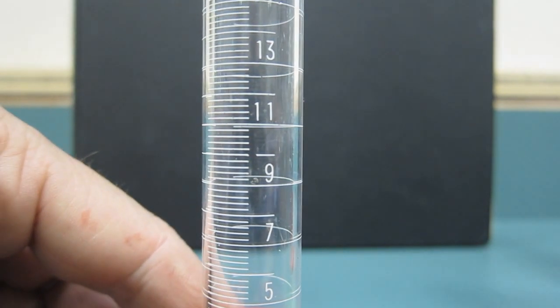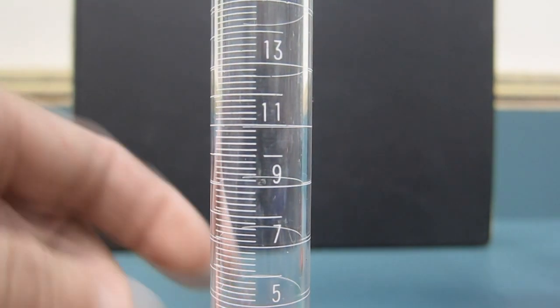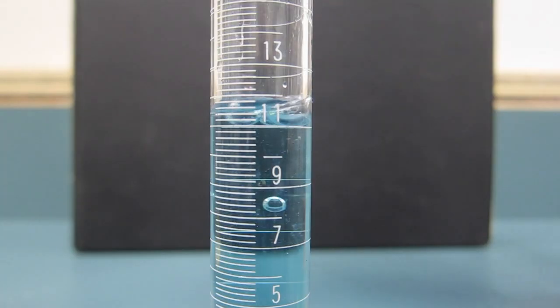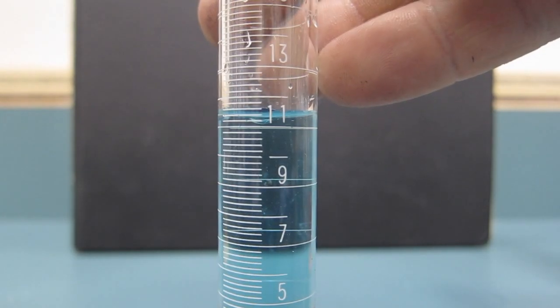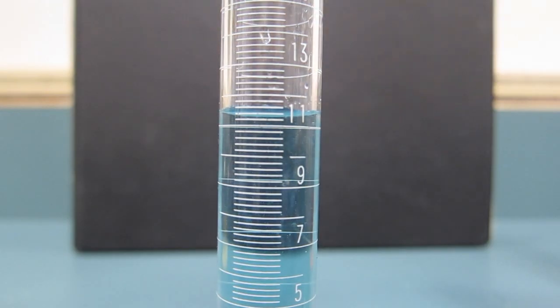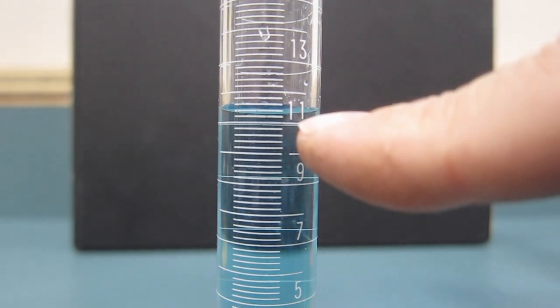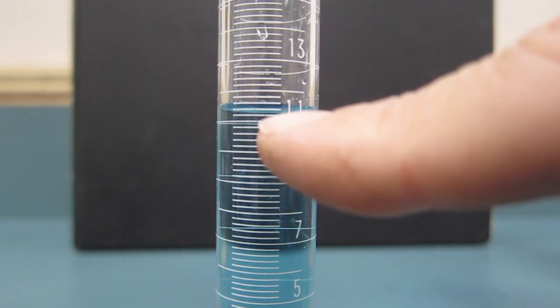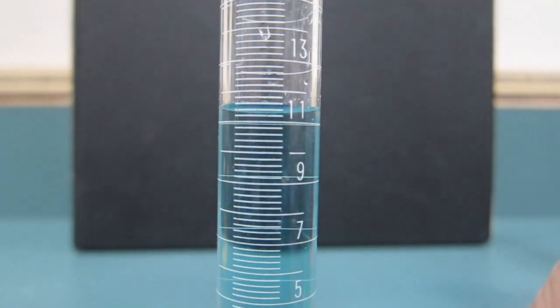So if I pour in some liquid here, again, this is the 25 milliliter one, but it's the more accurate, skinnier one. Let's see what we got right here. It looks like here's my 11 mark. Here's my 11.2, 11.4. I'm about 11.2, maybe slightly above that. So that's that one.